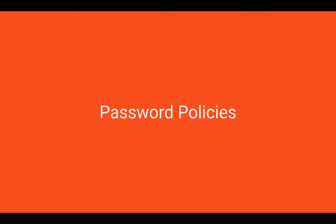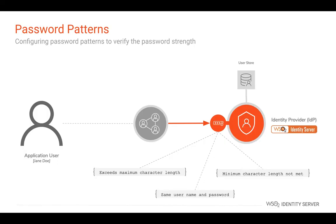Now let's check out the password policy management features supported in WSO2 Identity Server. WSO2 Identity Server enables verifying password strength using regular expressions, commonly known as regex. In addition to the default minimum and maximum character length verification, you can add more factors to verify password strength. This enables compliance with password policies required by various regulations. For example, you can restrict users from using the same character pattern for both username and password.